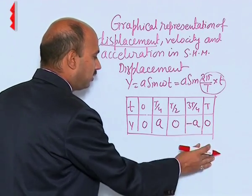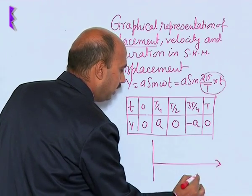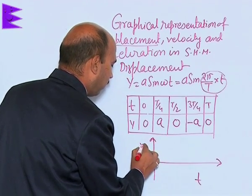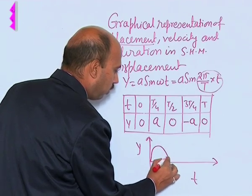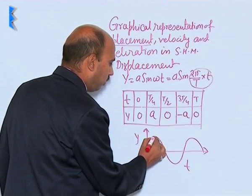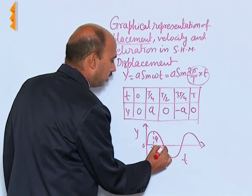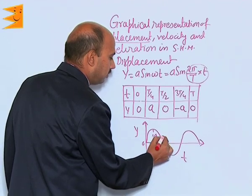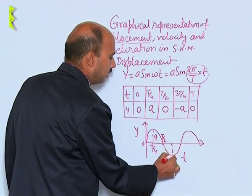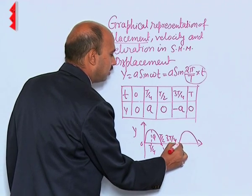So, if you draw its graph, you will be getting like this. Here is t, here is y, and the graph is obtained in this way. So, here 0 and this is a, this is here t by 4, this is 0 here, this is t by 2, this is 3 t by 4, this is minus a and it is again t.